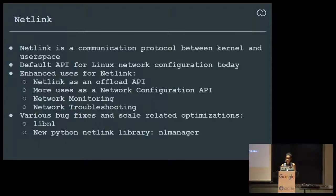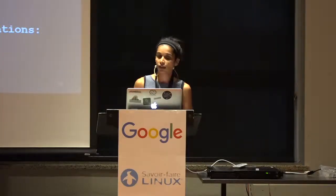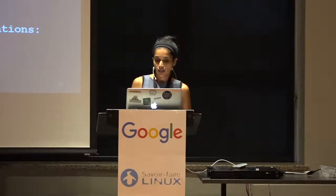We have reused Netlink to a great extent. For us it's also an offload API — basically offloading Linux networking to hardware switch ASICs. It has also become a very powerful API for adding monitoring capabilities and for network troubleshooting. We had to enhance Netlink libraries for scale, like LibNL, and we also ended up writing another Python Netlink manager library.